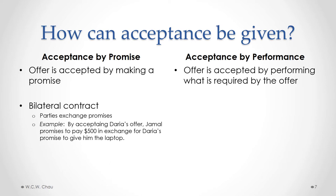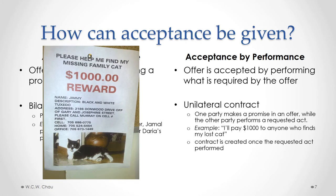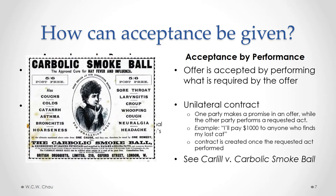For acceptance by performance, an offer is accepted by the other party performing what is required by the offer. This is called a unilateral contract, where one party makes a promise in an offer while the other party performs a requested act set out by the terms of the offer. A classic example is when someone loses a pet like a cat and puts up a sign saying, I'll pay $1,000 to anyone who finds my lost cat. You promise to pay $1,000 in exchange for the performance — the other person going out, finding, and returning your cat. The contract is created once that requested act is performed.